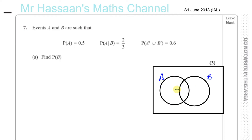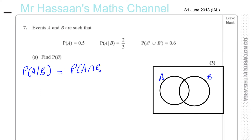The probability of A given B is 2 thirds. What that means in terms of the Venn diagram is: when you're considering only B, the part of A inside B divided by the whole of B is equal to 2 thirds. So basically, the probability of A intersection B divided by the probability of B equals 2 thirds. We're only considering B, and this area — the part of A that's inside B divided by all of B — is 2 thirds.